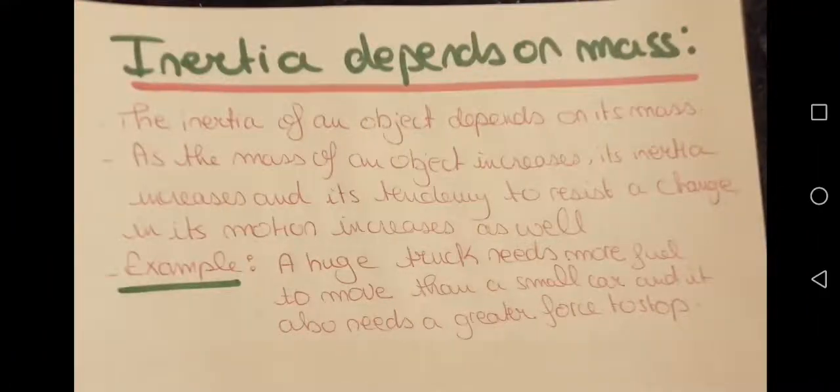Inertia depends on mass. The inertia of an object depends on its mass. As the mass of the object increases, its inertia increases and its tendency to resist a change in its motion increases as well. For example, a huge truck needs more fuel to move than a small car and it also needs a greater force to stop, because it has a greater mass than the small car, thus it has a greater inertia.